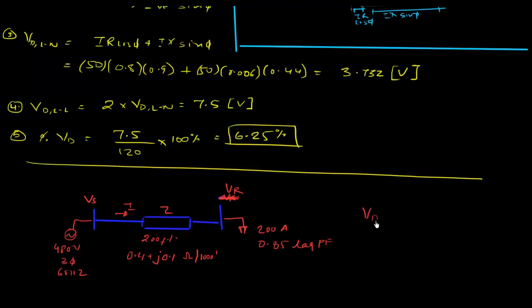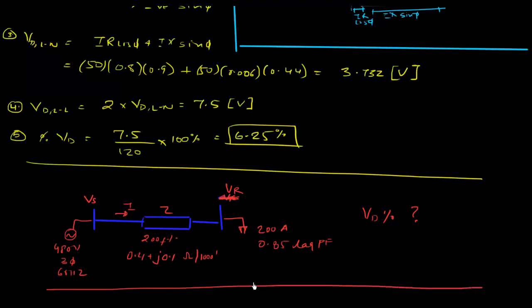The load is 200 amps operating at 0.85 lagging power factor. Find the voltage drop percentage and leave your answers in the comment section below, or send me an email at nimish@movingelectrons.com. I hope the topic was clear — if you have questions, leave a comment or email me and I'll get back to you.